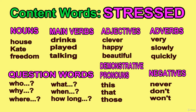The content words are stressed in the sentence. They are nouns such as house, gate, freedom, and so on. Main verbs, for example, drinks, played, talking. Adjectives: clever, happy, beautiful. Adverbs: very slowly, quickly.